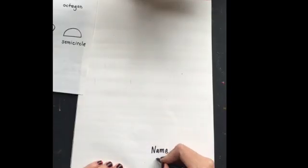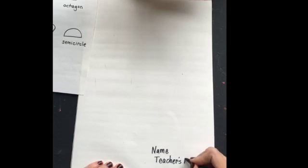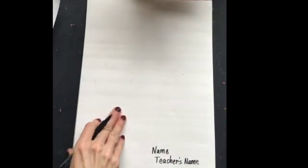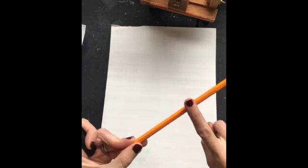The first thing we're going to do is write our name and our teacher's name on the back. Now flip that paper like a pancake. Now I'm going to be using a marker but you won't be using a marker. You'll be using a pencil.